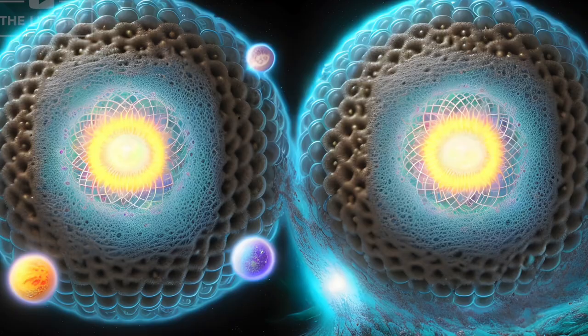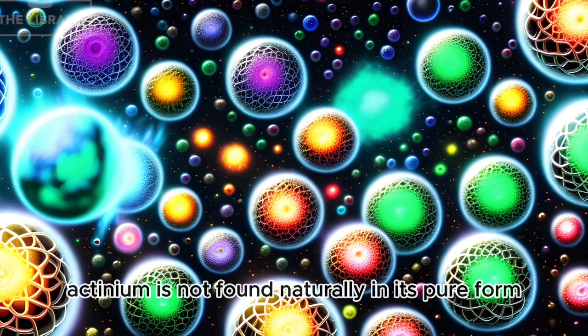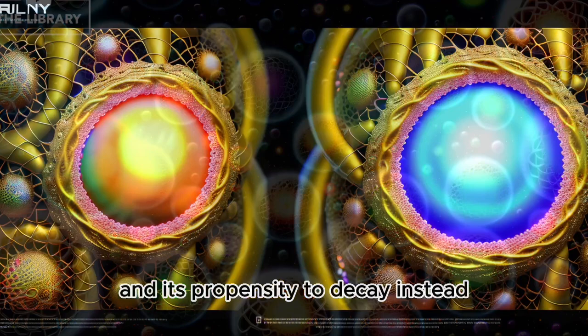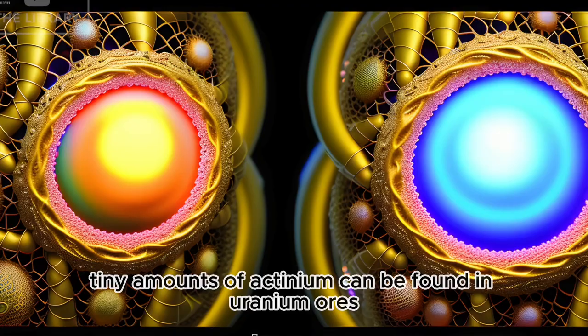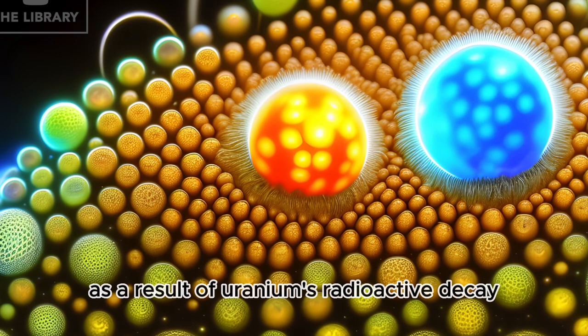Actinium in Nature and Extraction. Actinium is not found naturally in its pure form due to its high radioactivity and its propensity to decay. Instead, tiny amounts of actinium can be found in uranium ores, where it is continuously being formed as a result of uranium's radioactive decay.